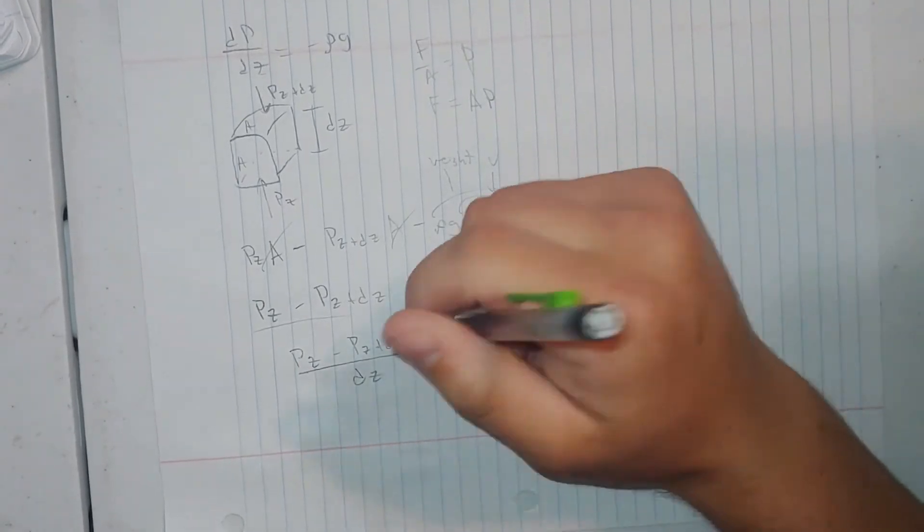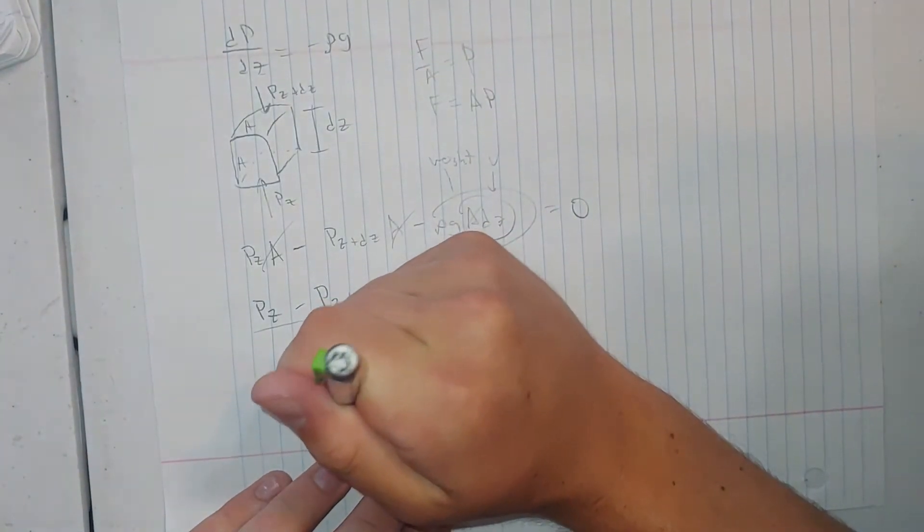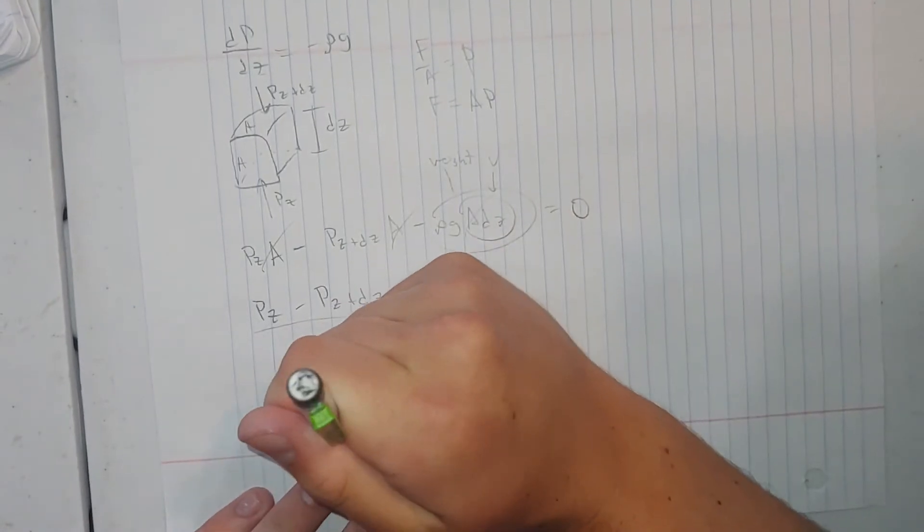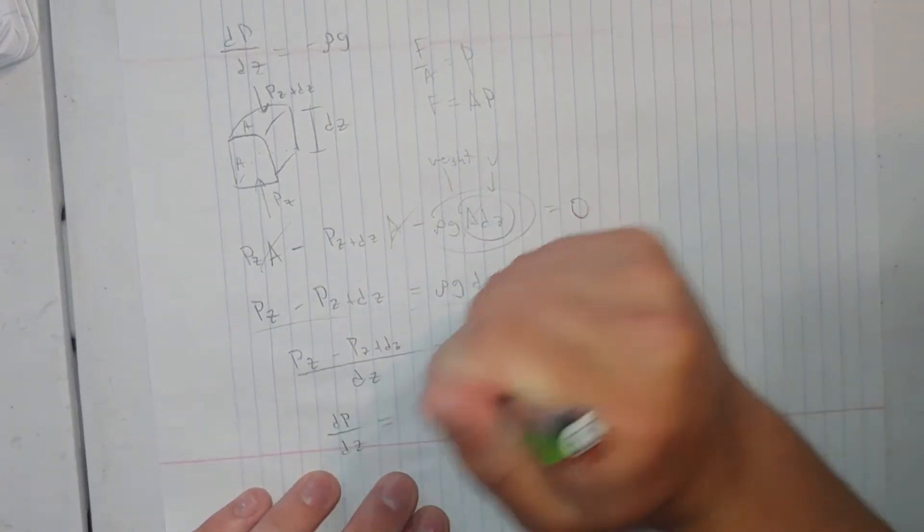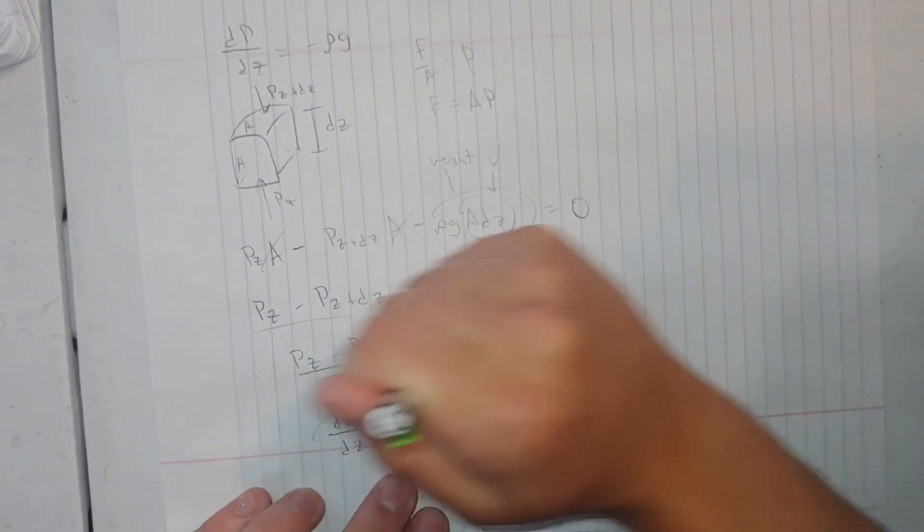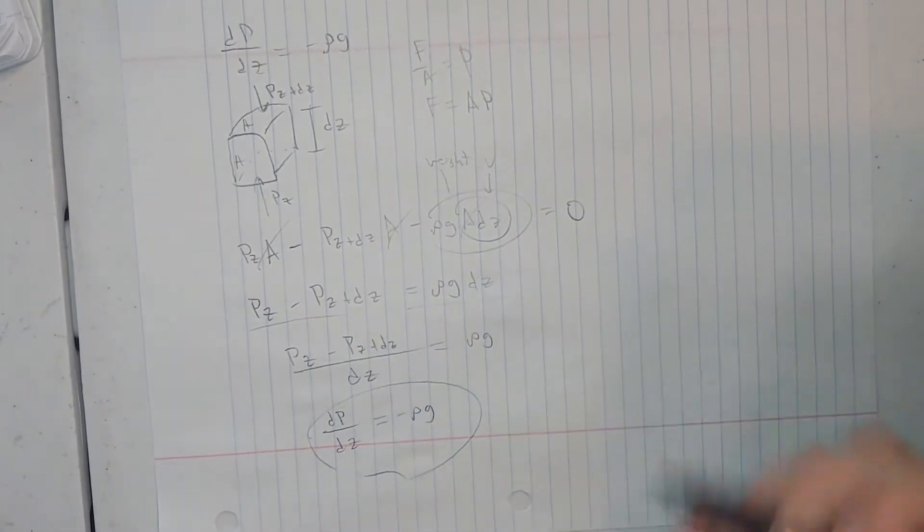Now we're going to multiply each of these terms by minus one, which leaves us with dp/dz equals the opposite of ρ times gravity, or density times gravity.